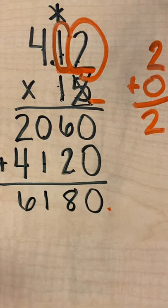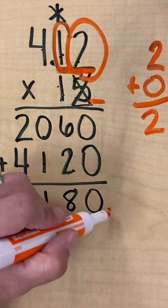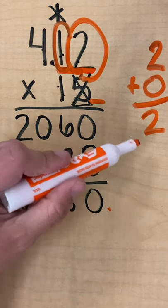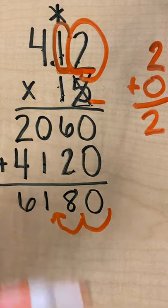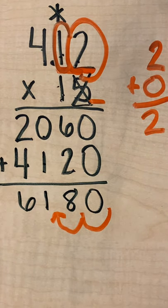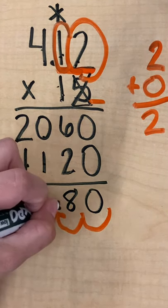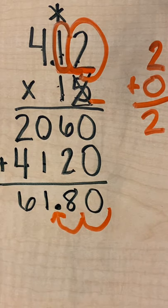So I'm going to take that imaginary decimal that's behind every whole number and I'm going to count the spaces between the numbers and move it over two times: one, two. So I'm going to move my decimal right there. So my product of 4.12 times 15 is 61.80, or 61 and eight tenths.